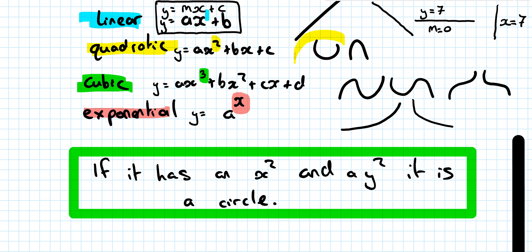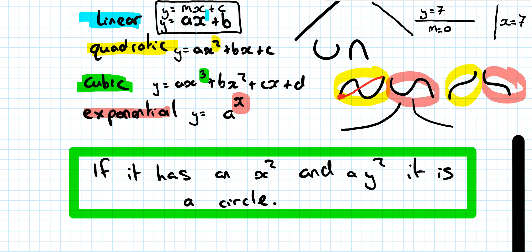With quadratics, the smiley face is positive and the frowny face is negative. With cubics, we have positive and negative forms. If you imagine from start to end it's going upwards, it's positive; start to end going downwards, it's negative. With exponentials similarly — start to end going upwards is a positive exponential, start to end going downwards is a negative exponential, and that relates to whether this leading number is positive or negative.